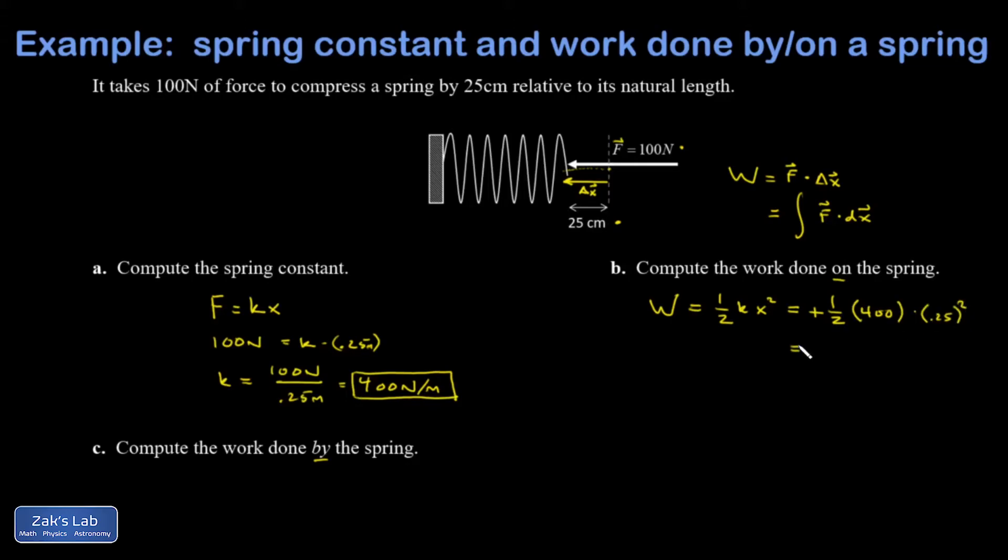And I get 12 and a half joules. So the work done on the spring is 12.5 joules, and that is a positive number.